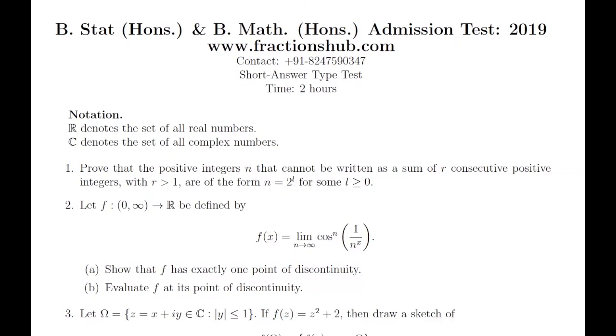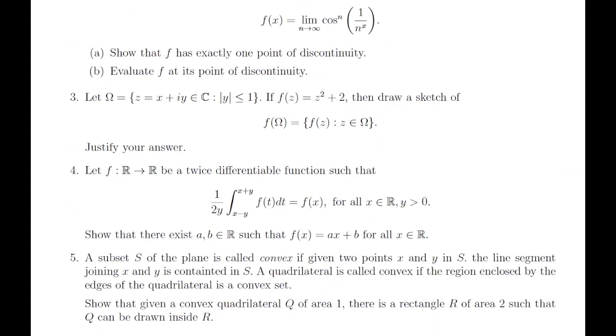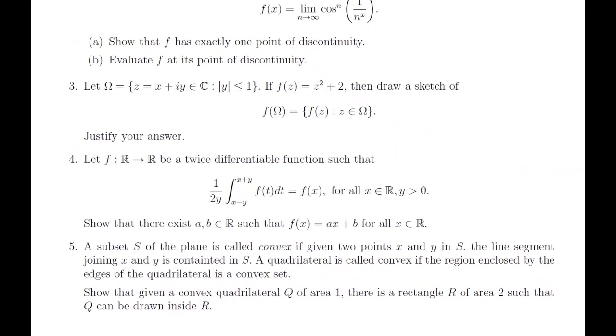Hello everyone. In this video we are going to discuss the fourth problem which came in B Math Beast 2019. The problem states that you have a function f from R to R which is twice differentiable, and the integration from x minus y to x plus y of f(t) dt equals 2 times y times f of x. This happens for all x and y greater than 0, and you have to show that f is a linear function of x.